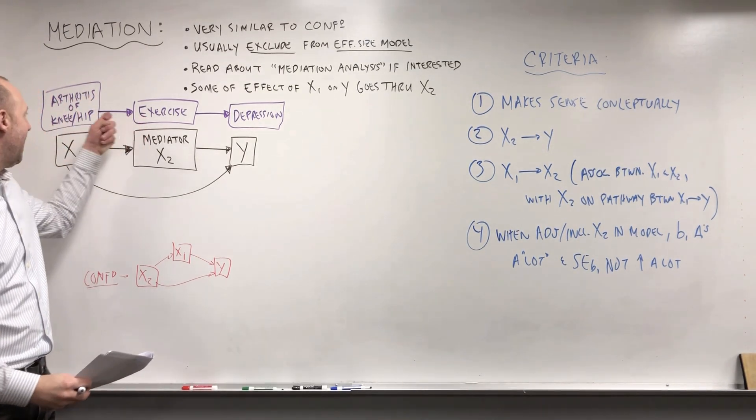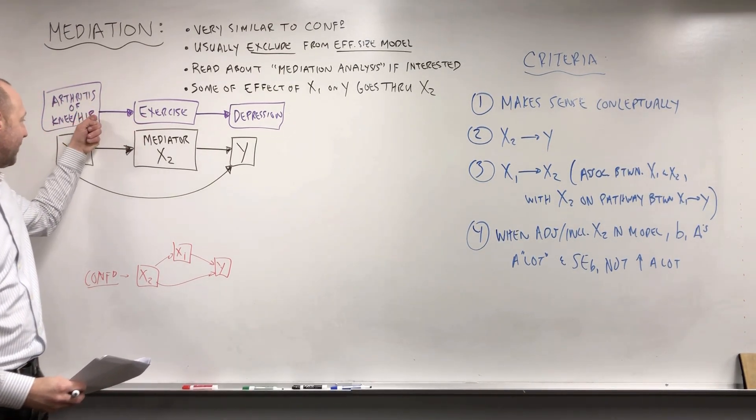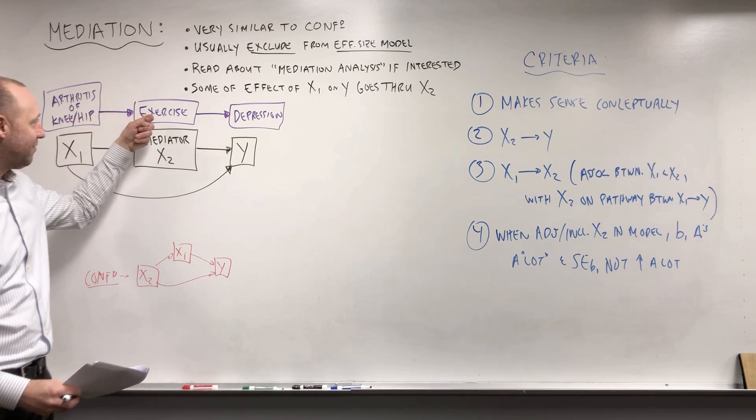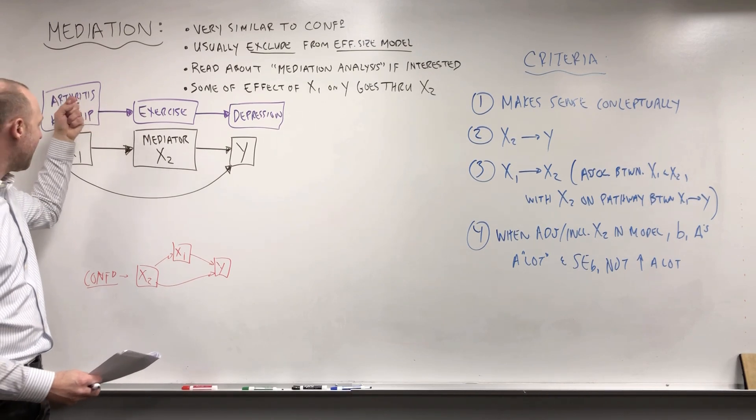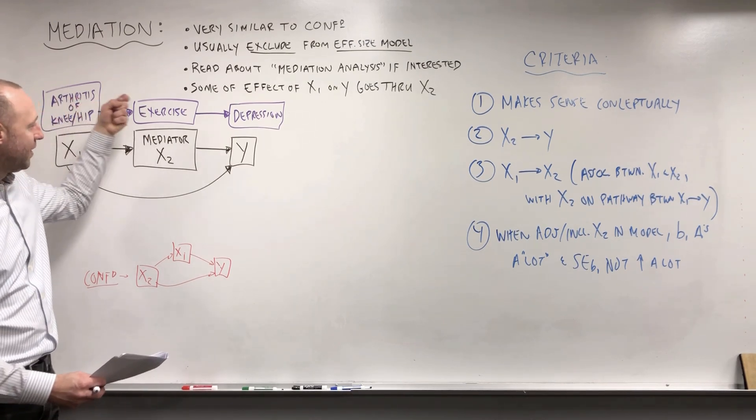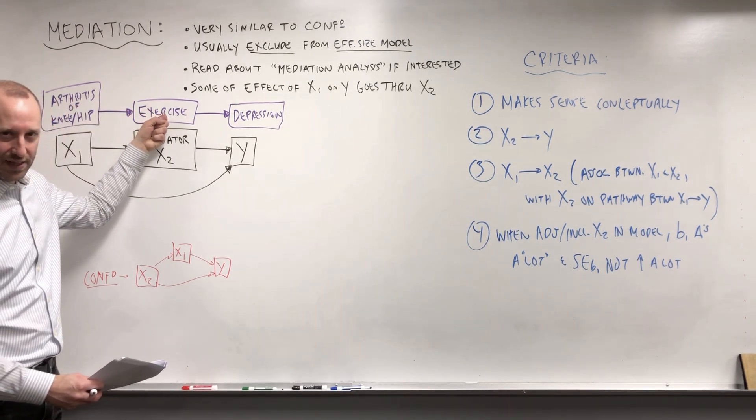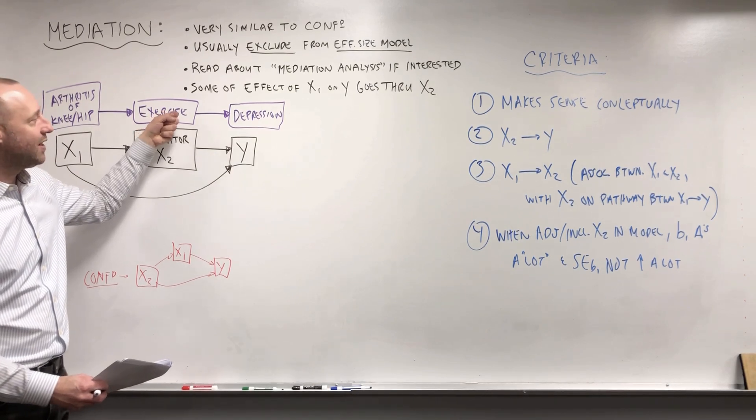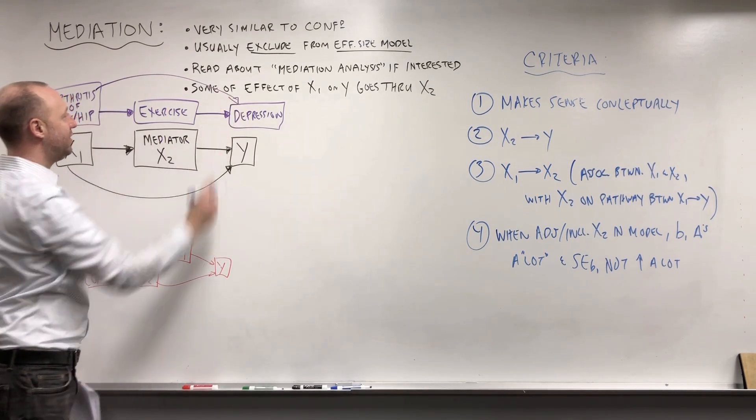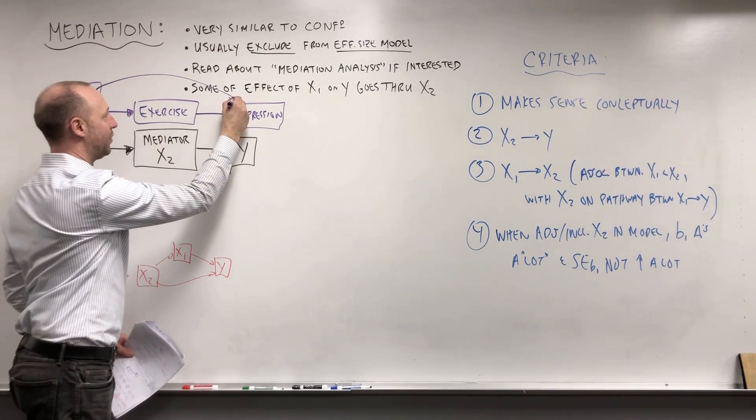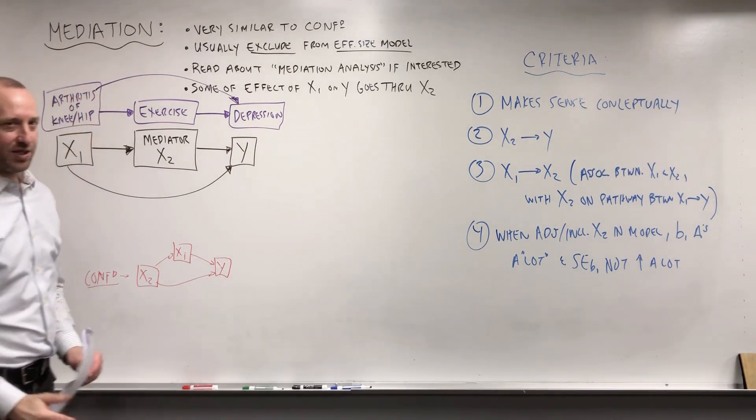So these are going to be associated, and having the arthritis in the knee or the hip is going to have a direct impact on exercise. So they're associated, and having arthritis in the knee or the hip leads to decreased exercise. Decreased exercise leads to increased risk of depression. And this may also have its own direct effect on depression as well.